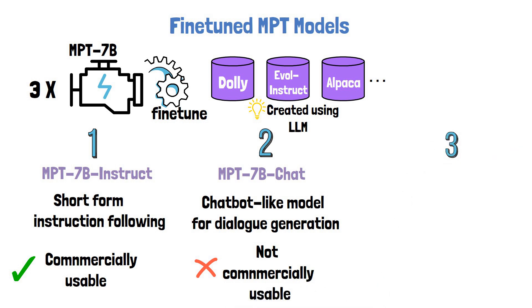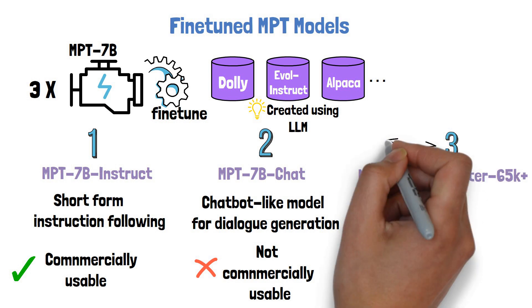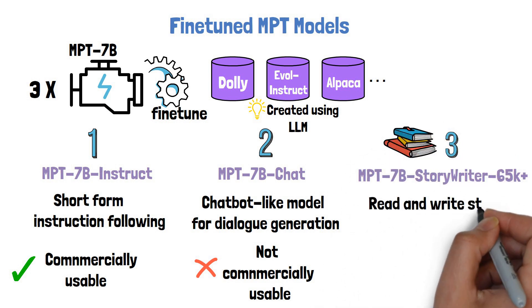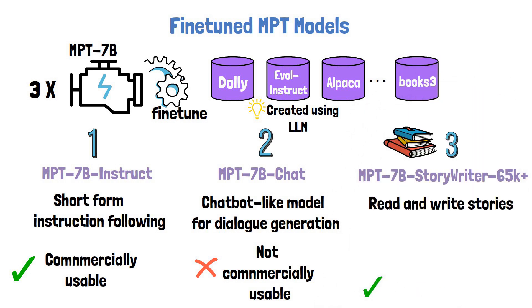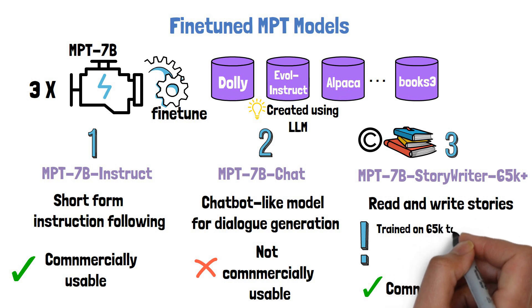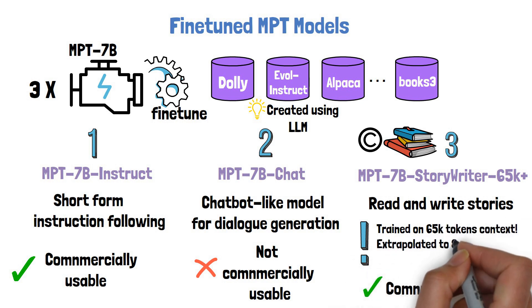The third model is called MPT-7B StoryWriter 65k+, and it gets even more interesting. This model was fine-tuned in order to read and write stories. It was trained on fiction books from the Books3 dataset. It is commercially usable similar to the Base and the Instruct model, although here it is debatable since there are copyrights for the books that was trained on. It was trained with huge context lengths of 65,000 tokens, and they were also able to extrapolate to 84,000 tokens in inference time thanks to ALiBi.